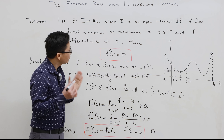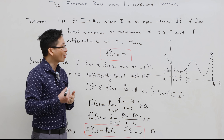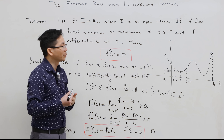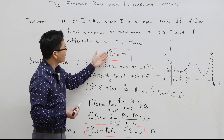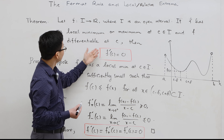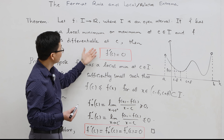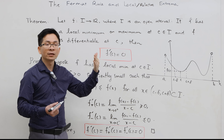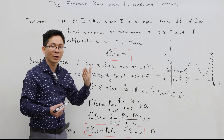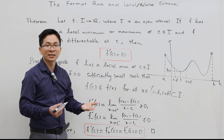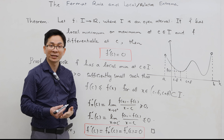To prove this theorem, I want to recall a very important fact: if a function f has a derivative at c — meaning it is differentiable at c — then the left derivative at c is equal to the right derivative at c, and both are equal to the derivative at that point.